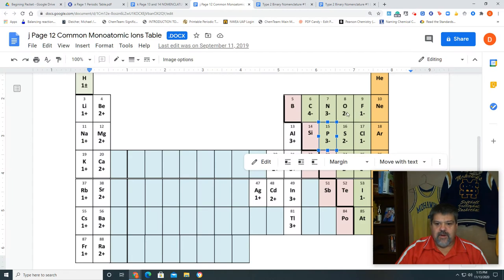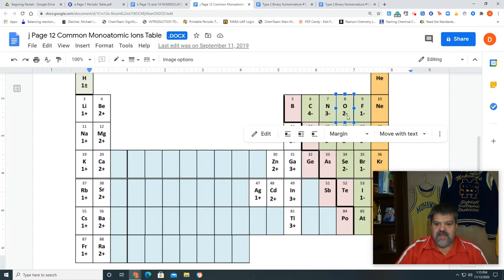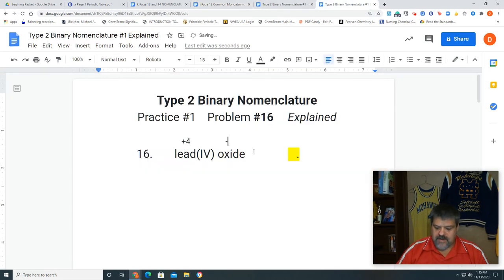If I go back to the monatomic, right there oxygen is. It's a negative 2. So let's go back and put a negative 2 there.